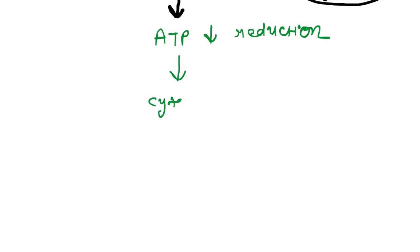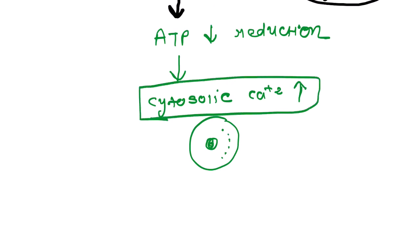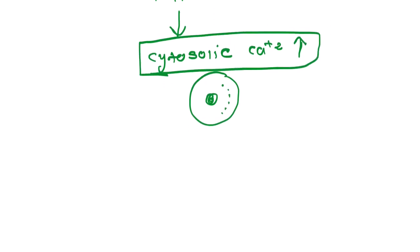ATP is required for pumping calcium out of the cytosol. Whenever ATP generation is reduced, inside the cell, there will be accumulation of calcium — cytosolic calcium will be increased.